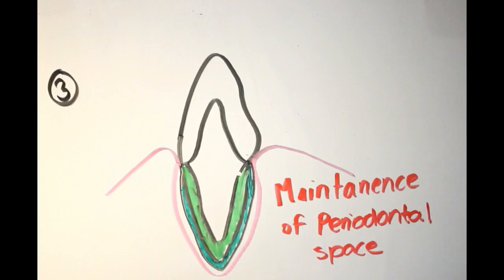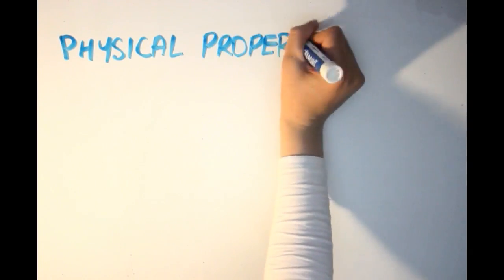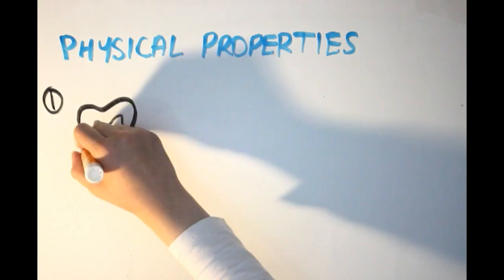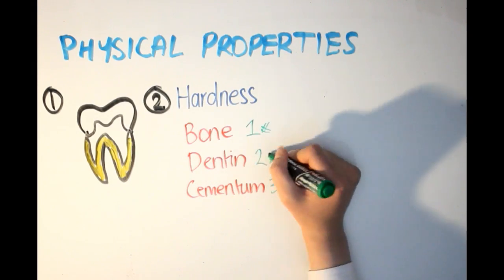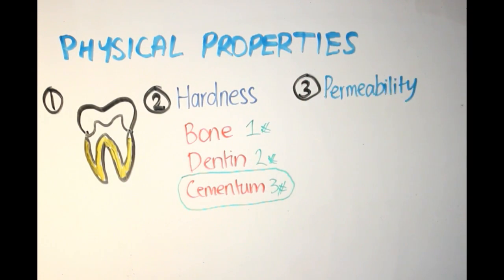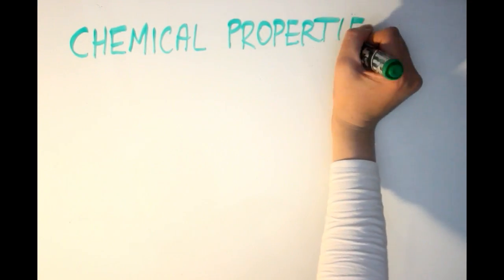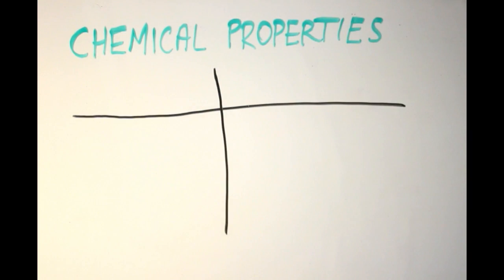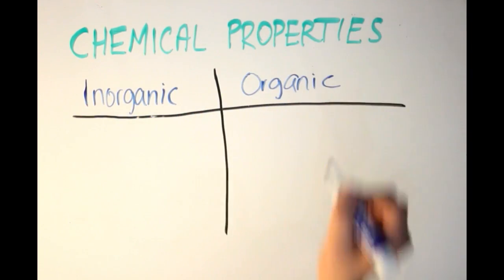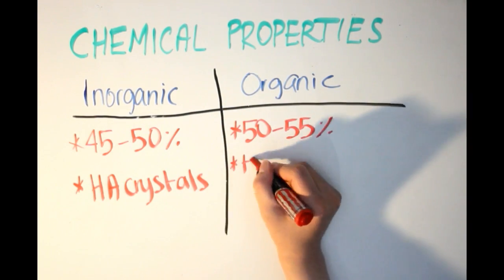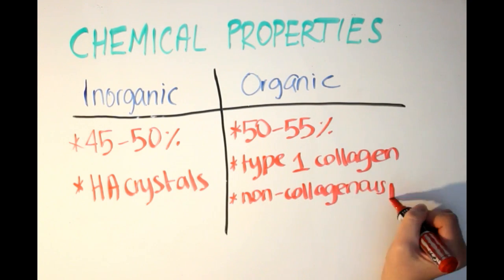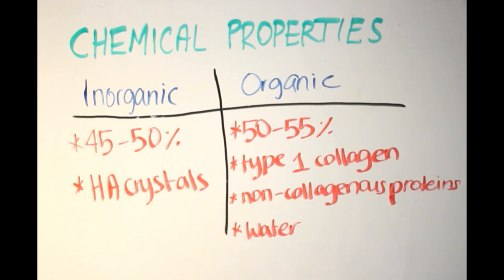As for its appearance, cementum is pale yellow with a dull cloudy surface. It's softer than both dentin and bone and more permeable than dentin. However, its permeability decreases with age and varies depending on the type of cementum. It's composed of 45 to 50 percent inorganic material that is mainly hydroxyapatite crystals. The remaining 50 to 55 percent represents the organic material, which is mainly collagen type 1 and non-collagenous proteins.